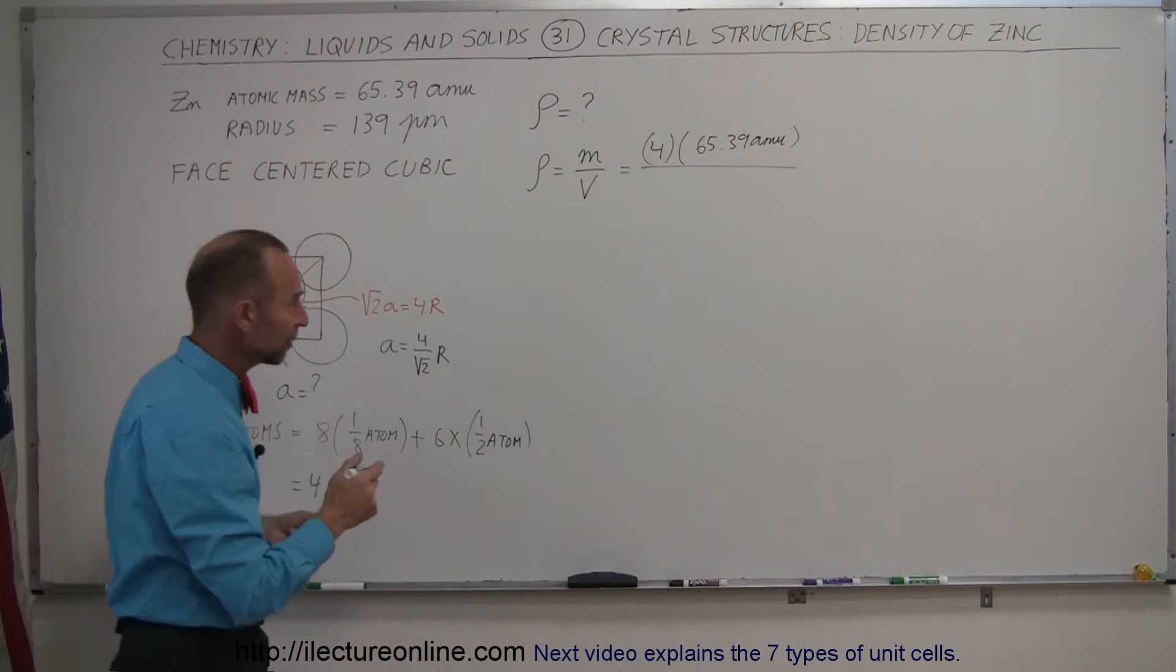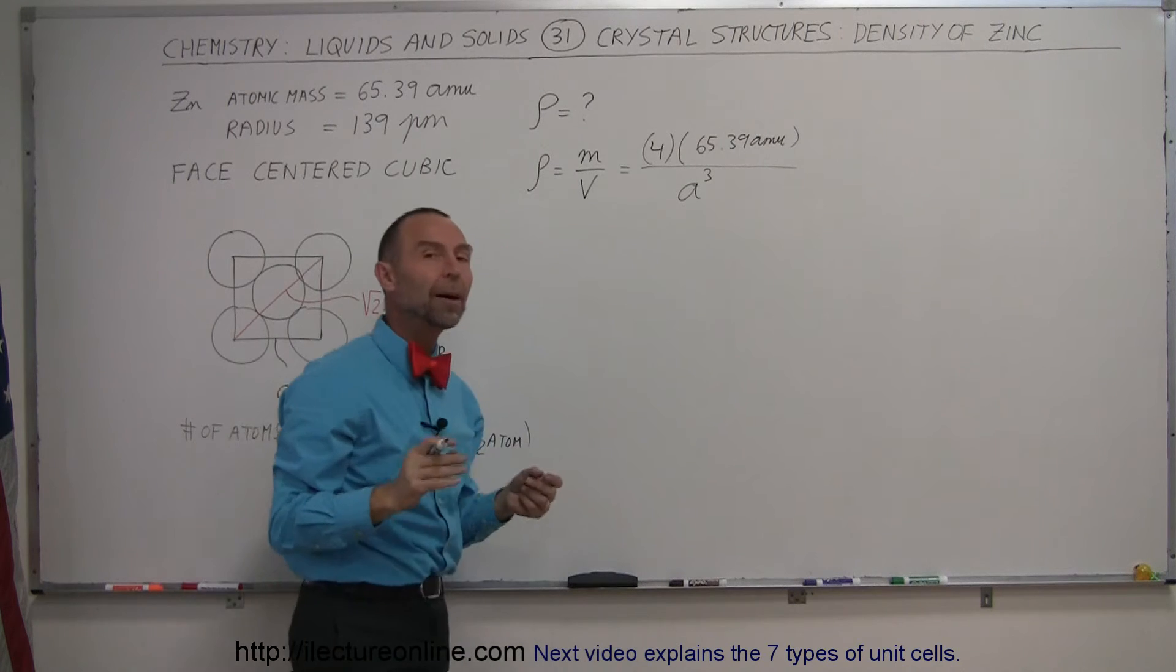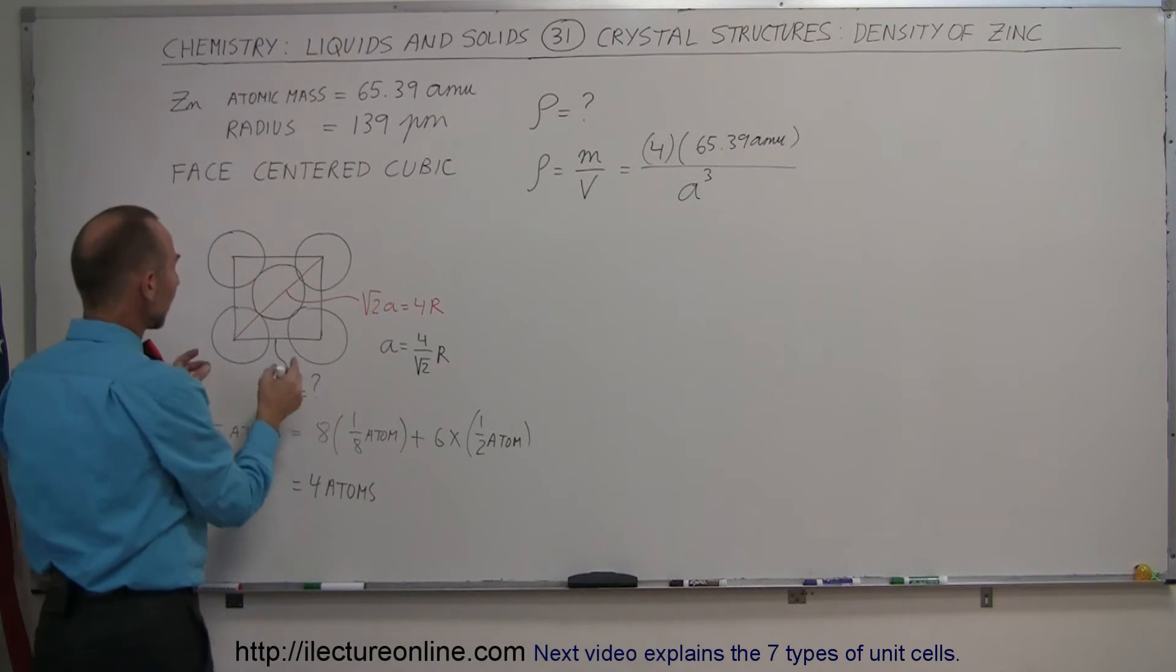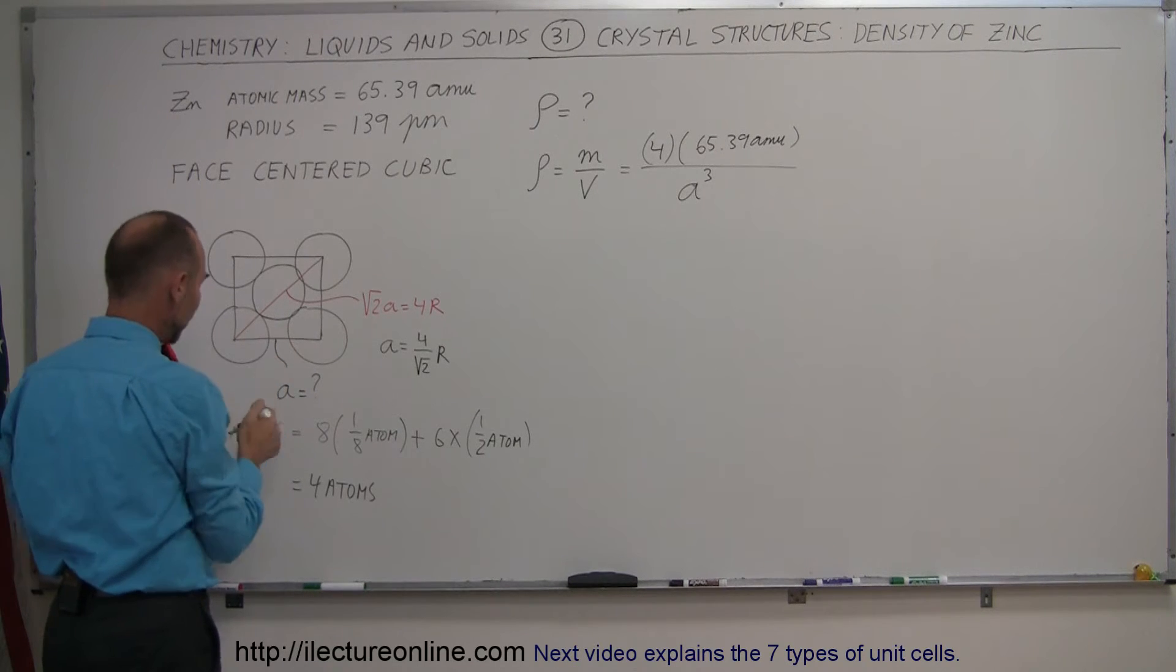Now we have divided by the volume. The volume, of course, is going to be this side cubed, A cubed. The question here is, how big is A? Notice that it's not going to simply be the diameter of an atom, because there's a space in between.